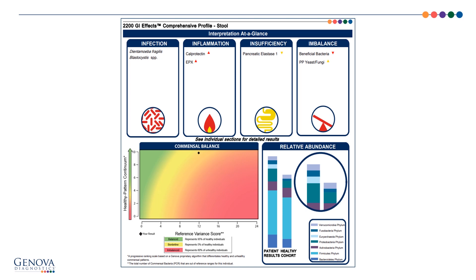In my experience, after reviewing thousands of these tests with clinicians on the phone, what stands out the most is the high calprotectin and high EPX because this indicates significant inflammation. It's not that the other findings are not important and those can be addressed as well, but calprotectin is a serious marker and with this patient's history, it is concerning. So that would be a good starting place.